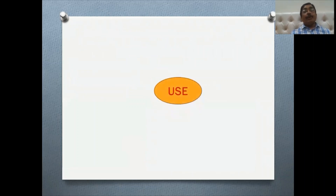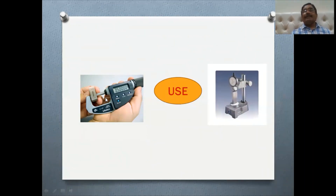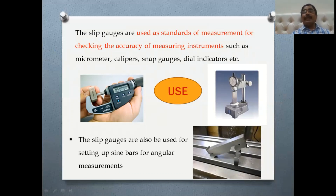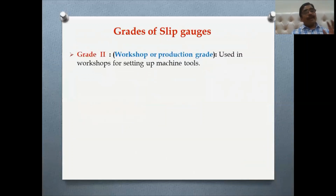The uses of slip gauges: first, they act as a masterpiece because they are highly accurate. Here I'm checking the accuracy of a micrometer with the help of a slip gauge. Second, we are setting a dial gauge using slip gauges. We can also use them with a vernier, and slip gauges are also used to set a sine bar — the instrument used for measuring angles.